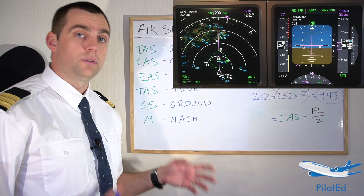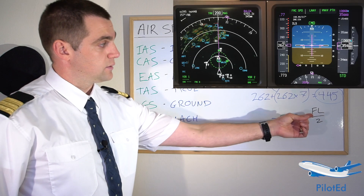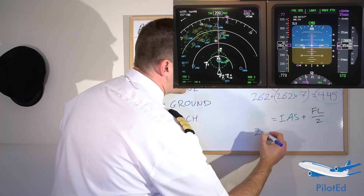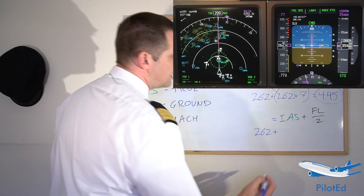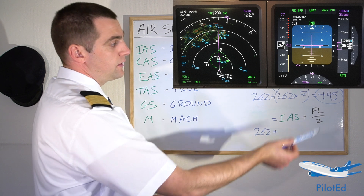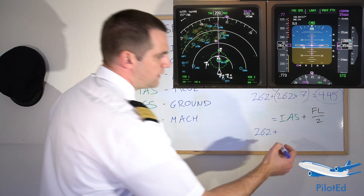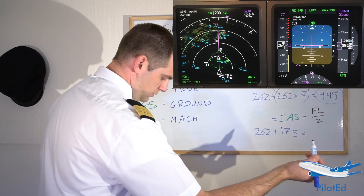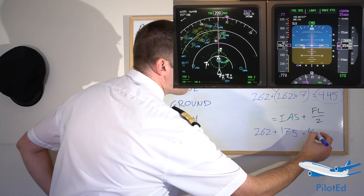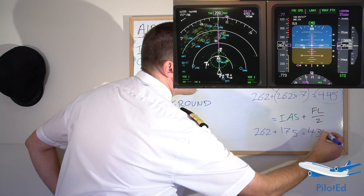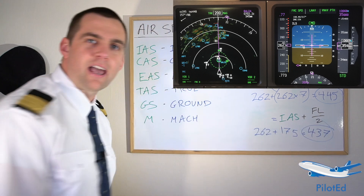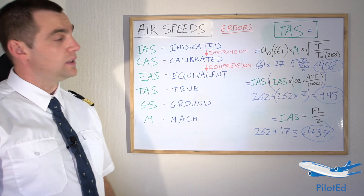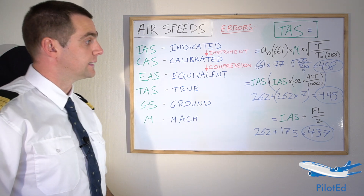The last equation works better for higher speeds and higher levels — hence why it includes the flight level. TAS equals IAS plus flight level divided by 2: 262 plus 350/2 equals 262 plus 175, which equals 437. As you can see, all three have got pretty close to the 448 that the aircraft is actually indicating.